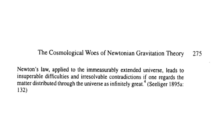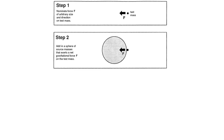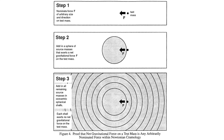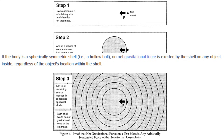But what was exactly the problem? An oversimplified way of understanding the Seeliger-Neumann paradox consists in realizing that for any given force of arbitrary magnitude and direction on a test particle, one can always draw a sphere of source masses that exert that force on the test particle, and draw the remaining source masses of the universe in concentric spherical shells that do not exert any gravitational force on the test particle by Newton's shell theorem — a spherical shell of source masses exerts no net force on a test mass located at any position within the shell.